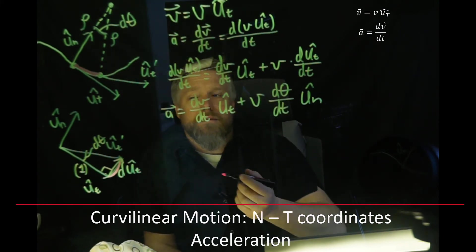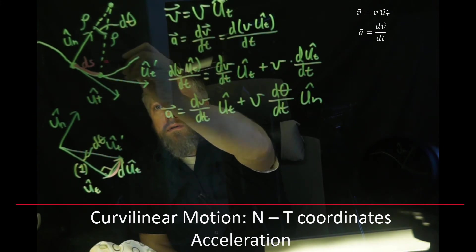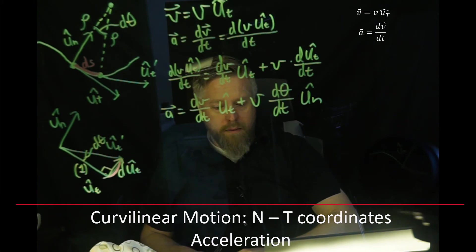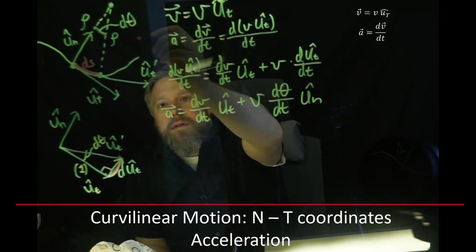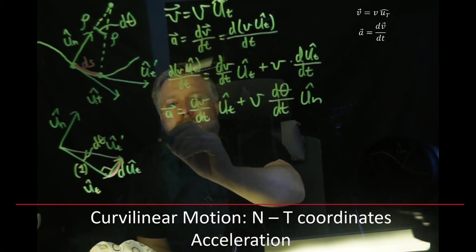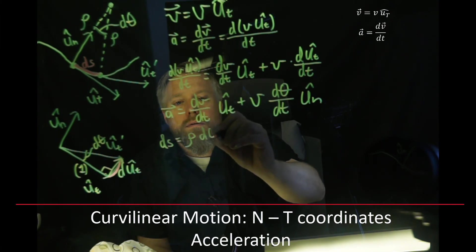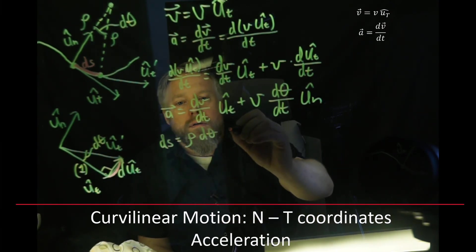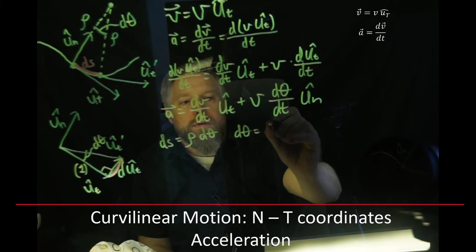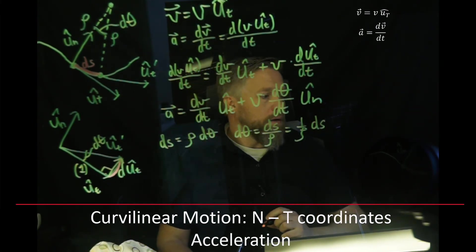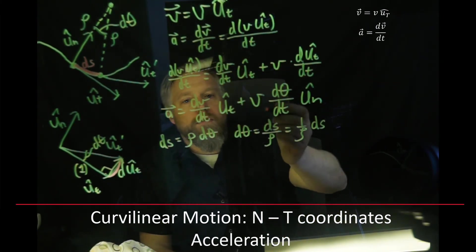Well, it would be rho dθ. And what are we going to call this arc? Well, it's a change in position. Change in position of our particle is a ds. So with that, we can look at it and say, well, ds is equal to rho dθ. Solve for dθ equals ds over rho, which is the same thing as 1 over rho times ds. Let's go ahead and plug that in for our dθ.